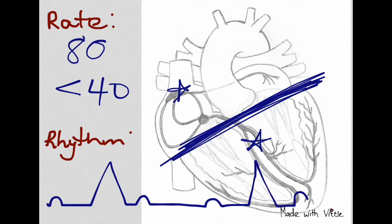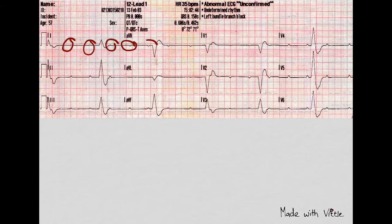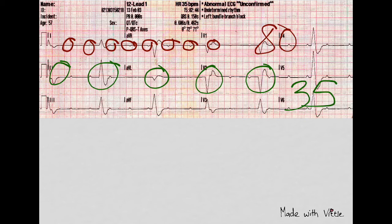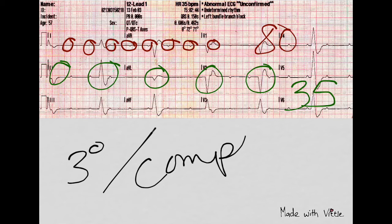The atrial rate will pan out at 80 and the ventricular rate will be much slower. We can see the P waves marching out across the tracing with an approximate rate of 80, and we can see the QRS complexes — wide and bizarre — marching out across the tracing with an approximate rate of 35. We can conclude that this is a third degree, or complete, heart block.